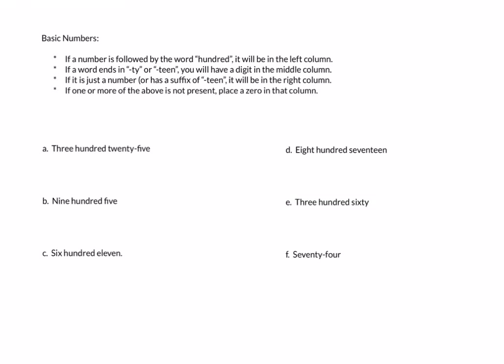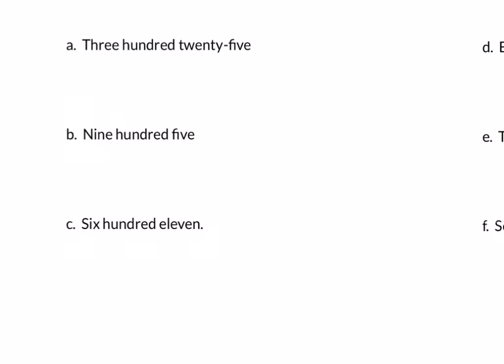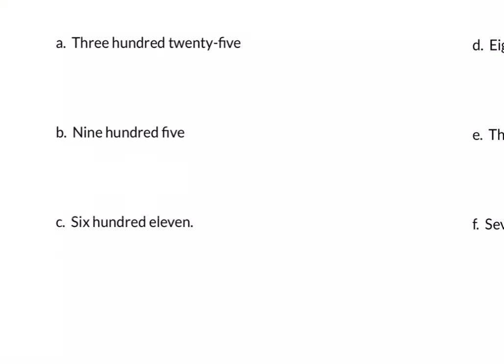Example a: we have three hundred twenty-five. We have 'three hundred,' so three goes in the left column. We have 'twenty,' which ends in 'ty,' so that goes in the middle column. And we have a five by itself, so five goes in the right column. Three hundred twenty-five is written 3-2-5.